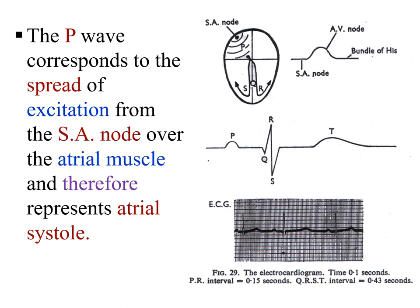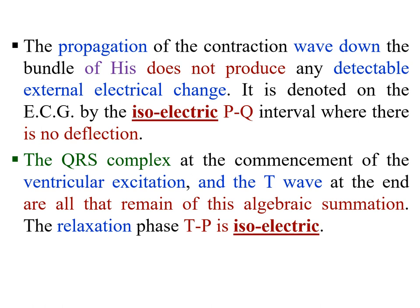The P wave corresponds to the spread of excitation from the SA node over the atrial muscle, and therefore represents atrial systole. The propagation of the contraction wave down the bundle of His does not produce any detectable external electrical changes; it is denoted on the ECG by the isoelectric PQ interval where there is no deflection. The QRS complex marks the commencement of ventricular excitation, and the T wave marks its end. The relaxation phase TP is isoelectric.